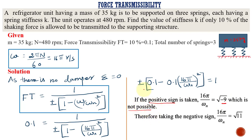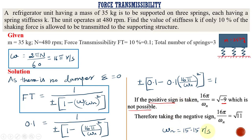Considering the negative sign instead, we get 16π/ωₙ equal to the square root of 11, which is a valid solution. Using the negative sign, the value of ωₙ is calculated as 15.15 radian per second. The natural frequency of this system has now been determined.